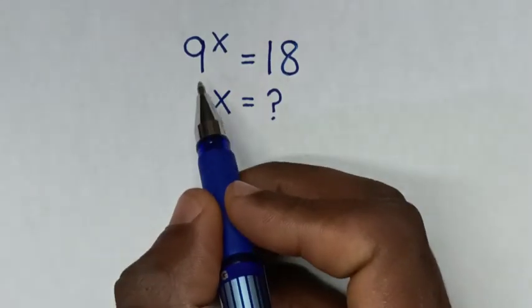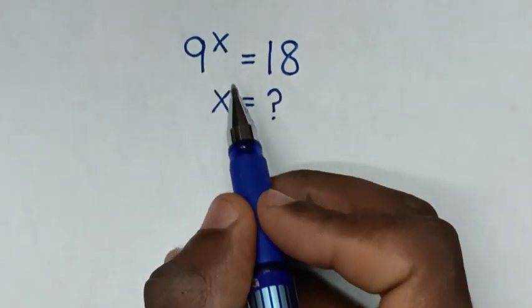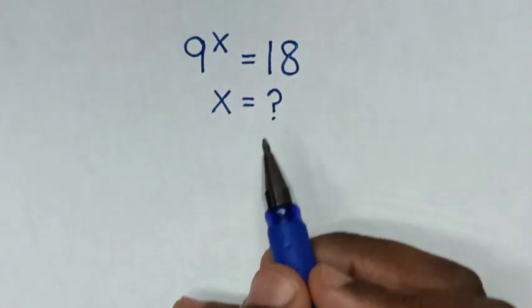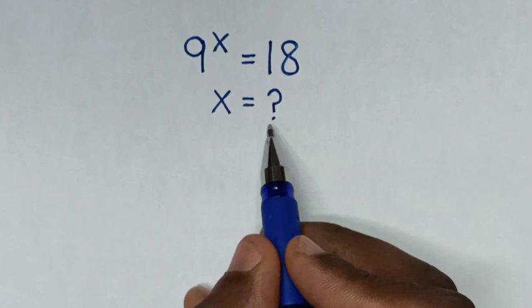Hello, how to solve 9 to the power of x is equal to 18, to find the value of x from this equation.